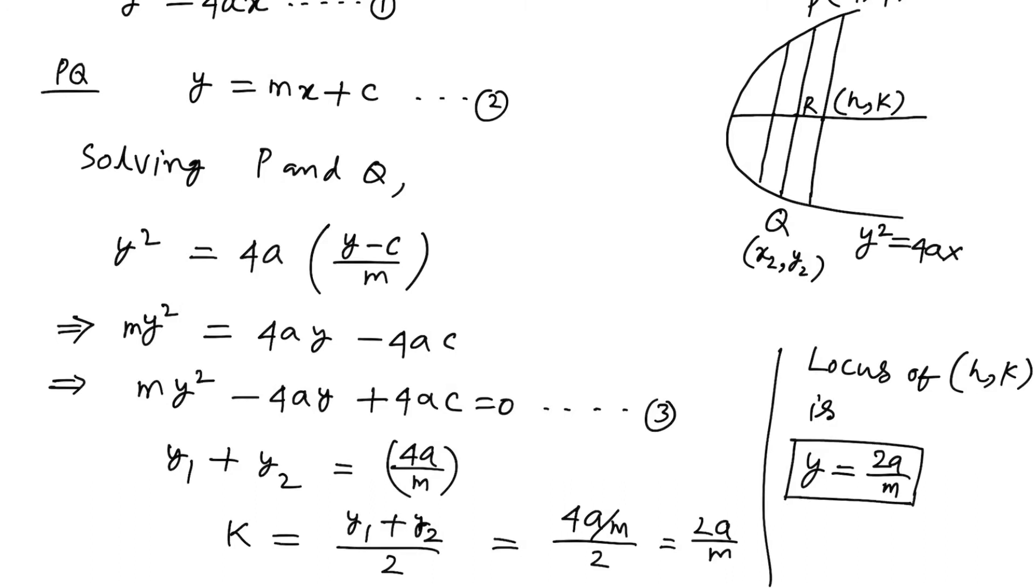From here, we can see the locus of the point (h, k) is y equals 2A by M. Therefore, this is the equation of the diameter.